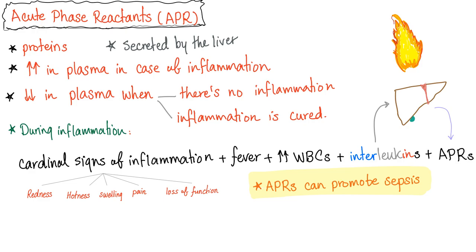Acute phase reactants, as discussed in previous videos, are proteins secreted by the liver. Their plasma level increases in cases of inflammation and decreases when inflammation resolves. During inflammation you have the cardinal signs: fever, leukocytosis, and interleukins — because interleukins are the internet of the leukocytes. Interleukins go to the liver, the liver secretes acute phase reactants. The cardinal signs of inflammation are redness, hotness, swelling, pain, and loss of function — rubor, calor, tumor, dolor, functio laesa. I love Latin.